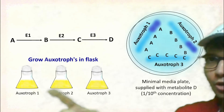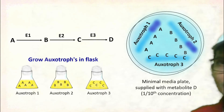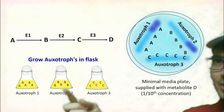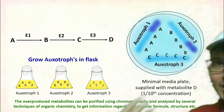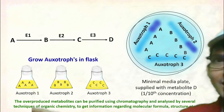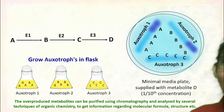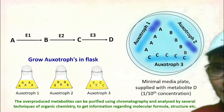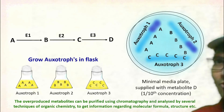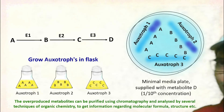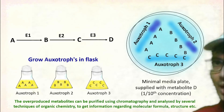Each of these auxotrophs can be grown in a flask. Once grown, they accumulate certain metabolites based on their mutation. These accumulated metabolites, which are secreted from the cells, can be purified by chromatography and analyzed by techniques such as mass spectroscopy. Using organic chemistry, you can derive the molecular formula for each metabolite. Once this is done, you can determine the pathway for the synthesis of metabolite D. This is how metabolic pathways are discovered.